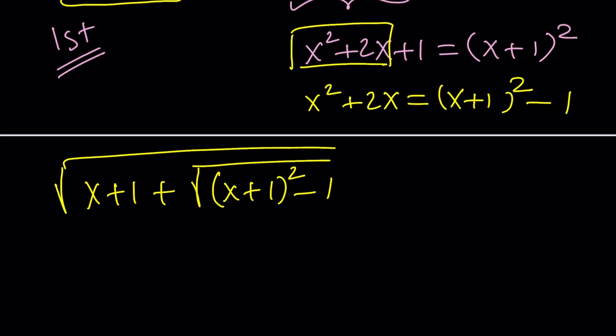And then we're going to use substitution at this point. Since x plus 1 is being repeated, let's go ahead and call it something. How about y? Don't ask y. You can use any variable you want. So if I set that equal to y, in other words, x plus 1 is equal to y, then we get the square root of y plus the square root of y squared minus 1.